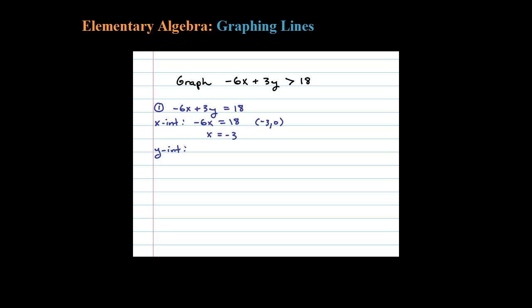The y-intercept occurs when x is 0, so when is 3y equal to 18? That's going to occur when y equals 6, so the y-intercept is 0 comma 6. Two points determine a line, so now let's graph that. Here's my coordinate system — let's plot the x-intercept at negative 3 comma 0.